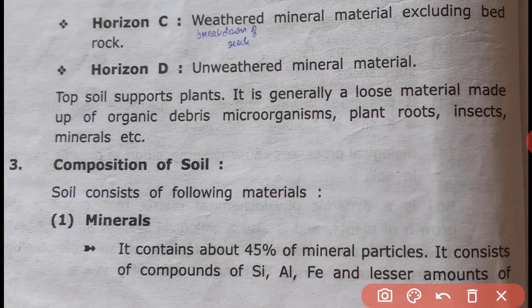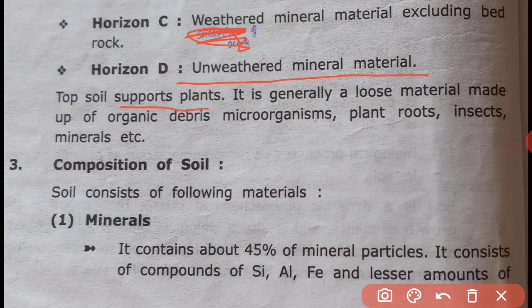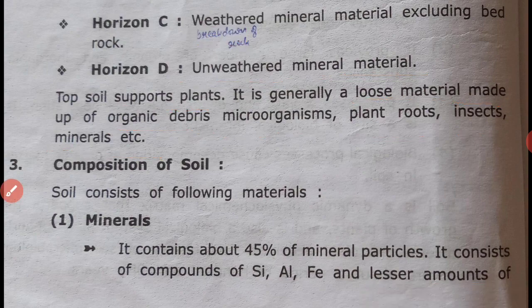The horizon layers include: unweathered material (bedrock), weathered breakdown material, and topsoil. Topsoil is generally a loose material made up of organic debris, organisms, plant roots, insects, and minerals. The soil profile composition includes loose organic debris, plant roots, insects, and minerals.